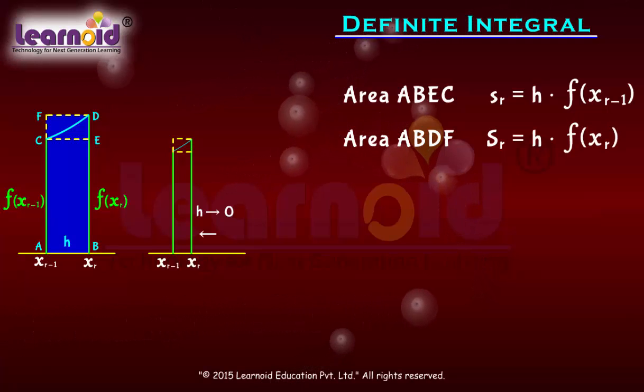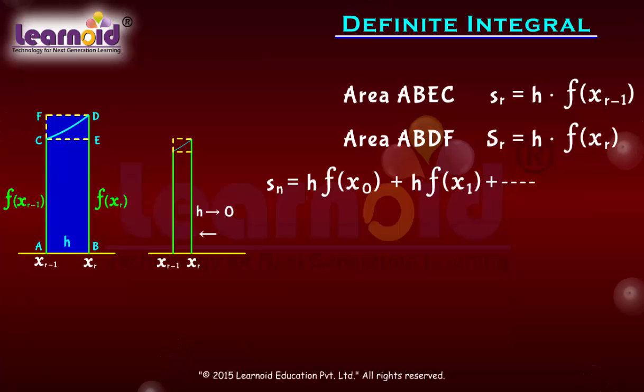Let us sum all lower rectangle areas: sₙ = h·f(x₀) + h·f(x₁) + ... + h·f(xₙ₋₁). Similarly, write sum of all upper rectangle areas: Sₙ = h·f(x₁) + h·f(x₂) + ... + h·f(xₙ).